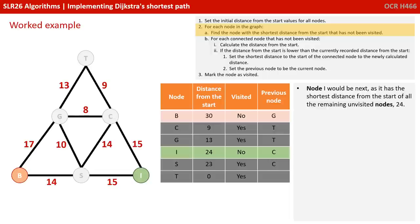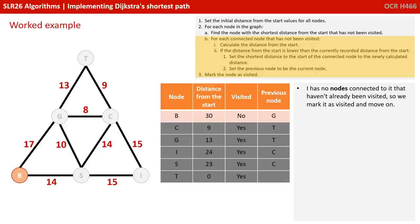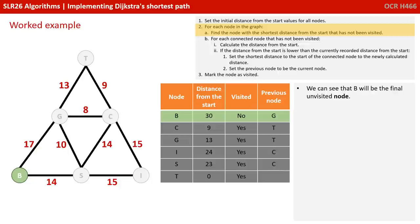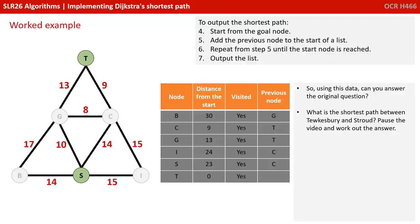Node I would be next with the shortest distance from start of remaining unvisited nodes at 24. After processing I, B will be the final unvisited node. As before, B has no connected nodes that haven't already been visited, so we mark it as visited. As there are no more unvisited nodes, the algorithm is complete. Can you answer the original question: what is the shortest path between Tewkesbury and Stroud?